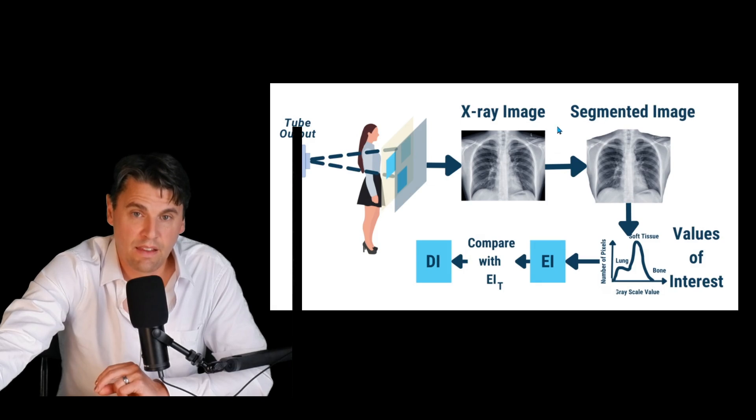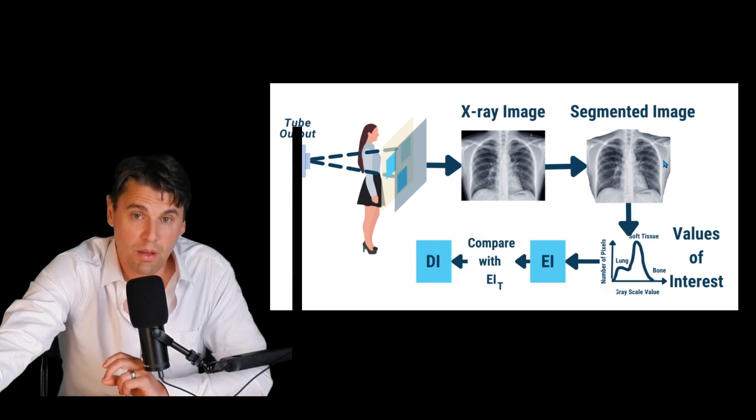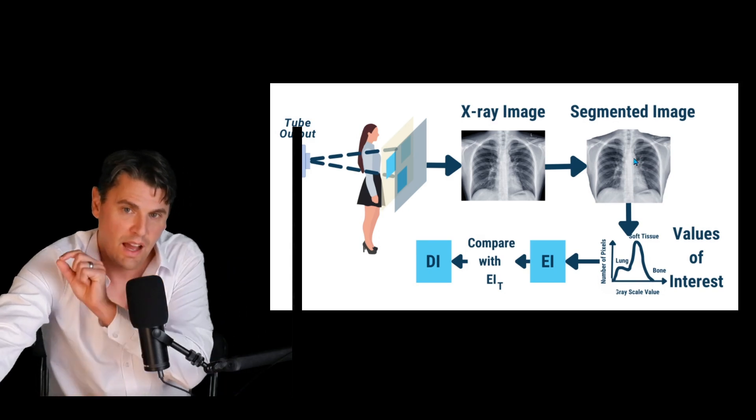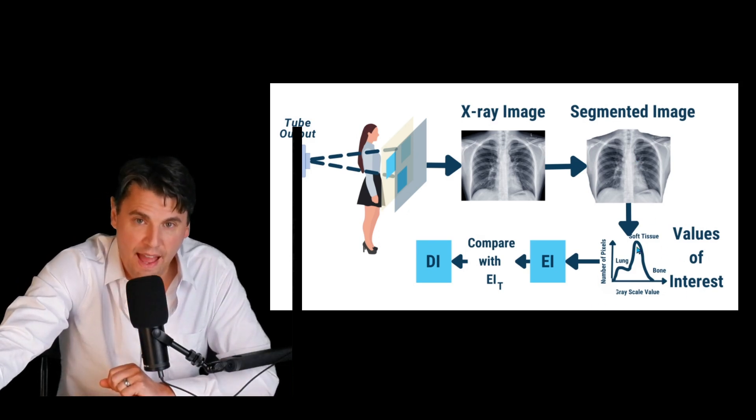We first identify what we call the values of interest. In that sense, we're actually just masking out all the dark pixels here that are outside of the actual patient. Once we get these values of interest, then we take what's called a histogram, where we're actually looking at each of the intensity values and counting how many times there was each of the different intensity values. Then we can use that along with calibrations of these numbers in order to get an exposure index.